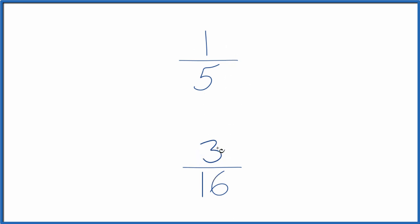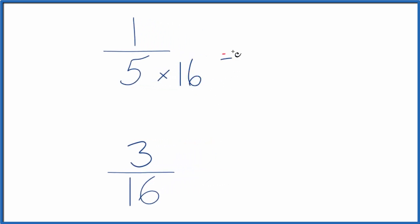Probably the best way to do that would be to take 5 and multiply it by 16. If I do that I end up with 80 and then down here I could multiply 16 by 5 and that would give me 80 as well. And now I have a denominator that's the same.